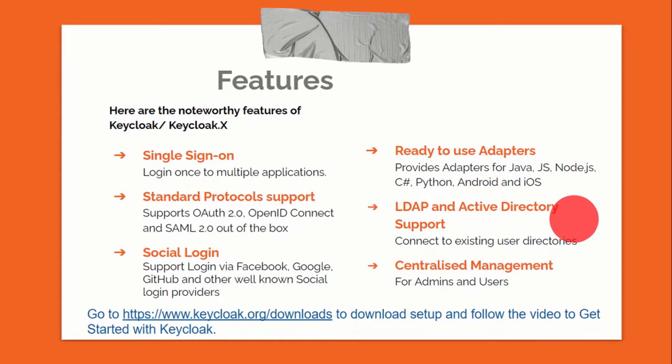Here are the salient features of Keycloak and why it is being used. First is single sign-on. Keycloak supports standard protocols like OAuth 2.0, OpenID Connect, and SAML 2.0 out of the box. Social login is also available — Keycloak supports multiple social login providers like Facebook, Google, and GitHub.